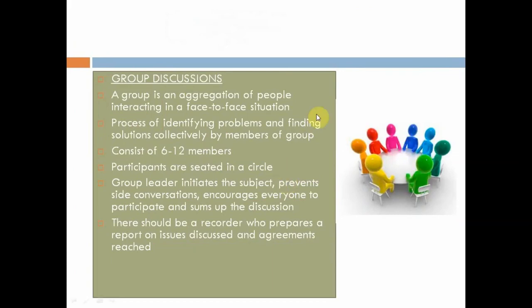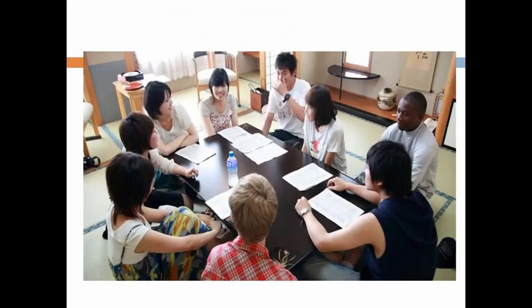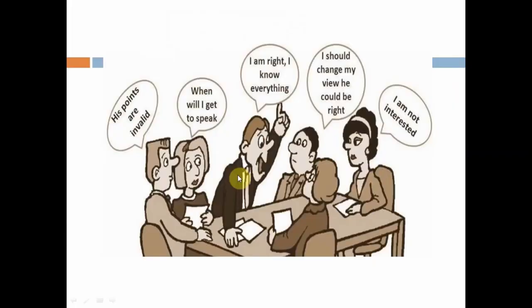Group discussion involves participants sitting face to face in a semicircle or circular arrangement, with around 6 to 12 members maximum. The group leader initiates the subject, prevents side conversations, and encourages everyone to participate. All participants are face to face with each other.